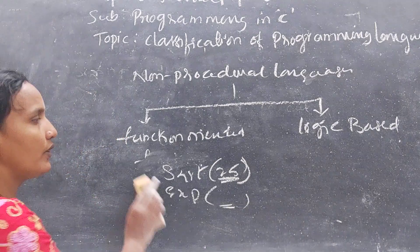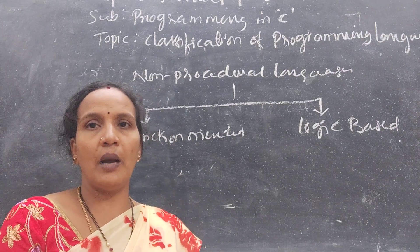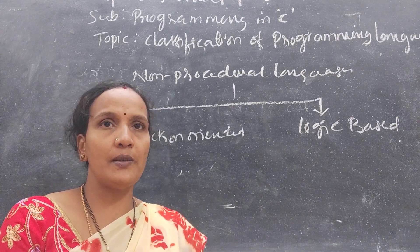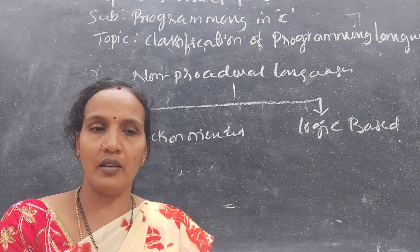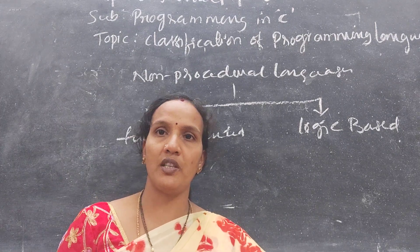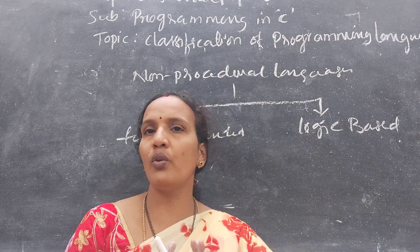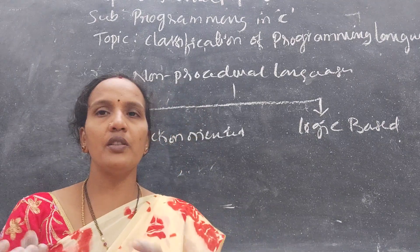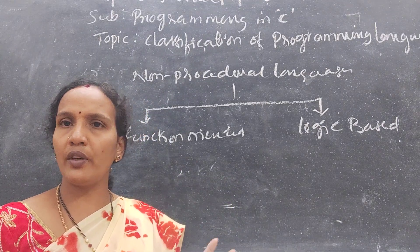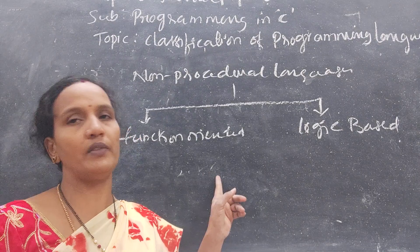In functional-oriented programming, you get built-in predefined functions. Just call the function and give the value to get the required result. It's like giving a catering order — you don't need to specify every ingredient and step. Just say how many members you want to cook for and the catering handles the rest. That is functional-oriented: call the function, supply the value, get the result.